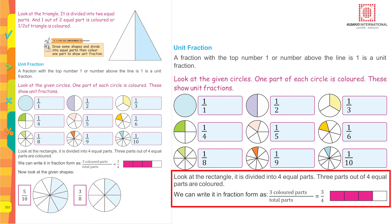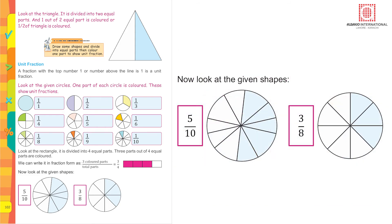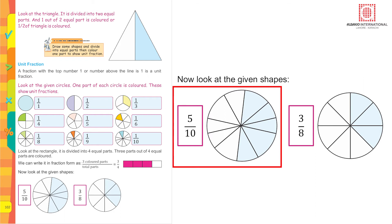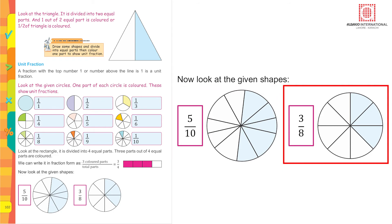Look at the rectangle — it is divided into four equal parts and three parts out of four are colored. We write it as three upon four; it is not a unit fraction. The first given shape is divided into ten equal parts: five are colored and five uncolored, so we write it as five upon ten. The next one is divided into eight equal parts; write the number of parts below the line and colored parts above — we read it as three upon eight.